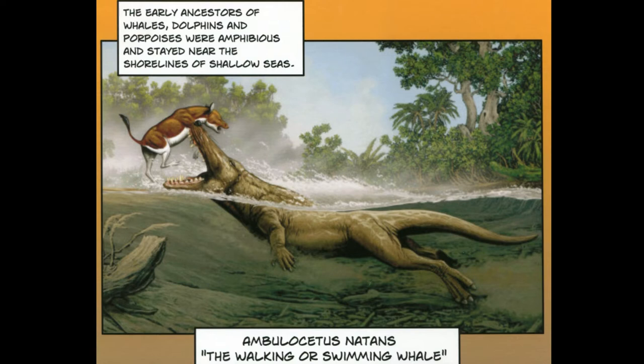The early ancestors of whales, dolphins, and porpoises were amphibious, which means they were able to live both on land and in the water, staying near the shorelines of shallow seas. These are some images of these early ancestors.